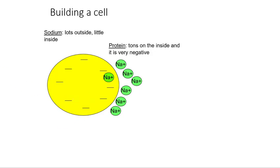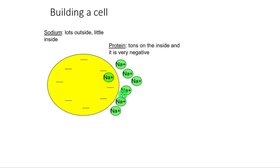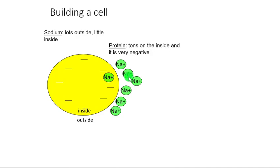Now let's set up our ions. The two ions we care about are sodium and potassium. Sodium exists as a positively charged cation. If you look at the illustration, where do I have a higher concentration of sodium — on the inside or the outside of the cell? Clearly, based on this illustration, I have a higher concentration of sodium on the outside of the cell.